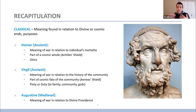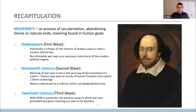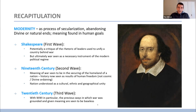We had a lecture providing a transition from the medieval age to the modern age. There I pointed out that St. Augustine and other medieval thinkers see the meaning of war in relationship to divine providence — what is the meaning of this conflict in terms of advancing God's plan, for particular people or for the unfolding of Christian truth. Then with modernity, broadly speaking — this large movement of the last 500 years or so — we can see that as a process of secularization, abandoning divine ends or natural ends, and finding meaning in human goals. Humans are positing their own goals.